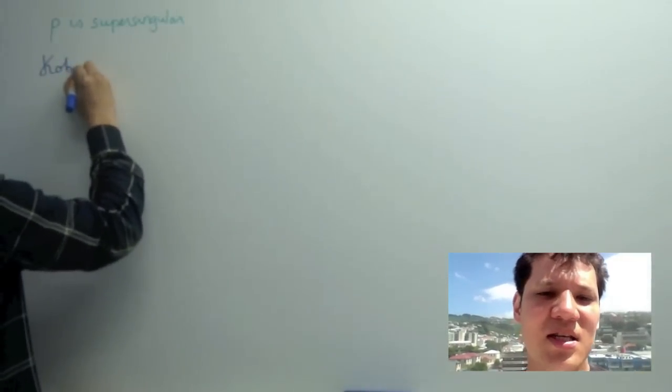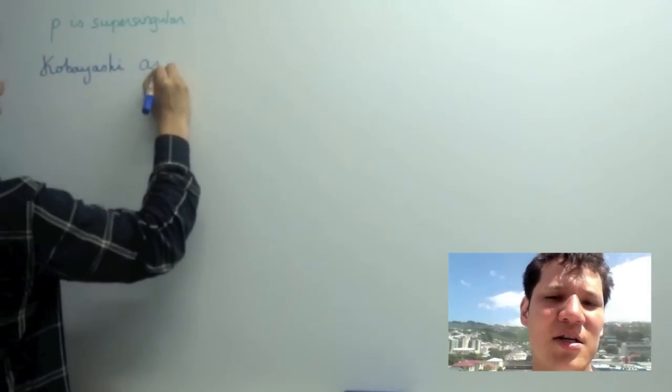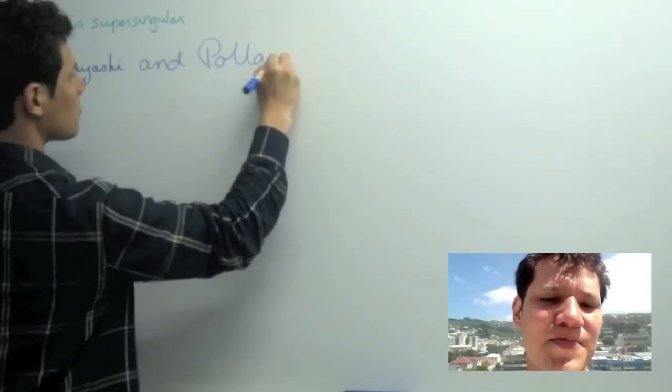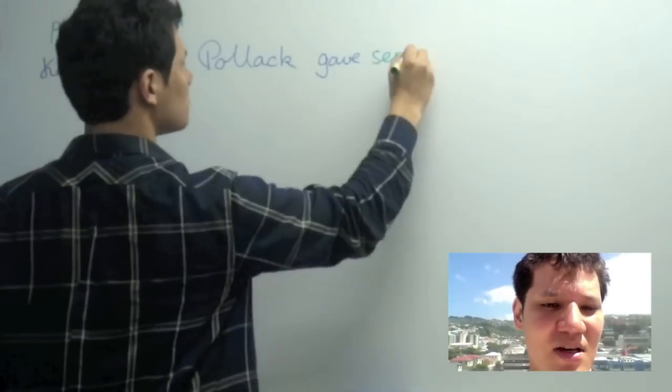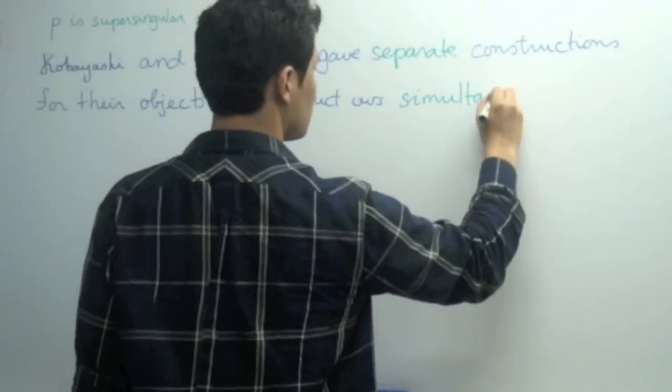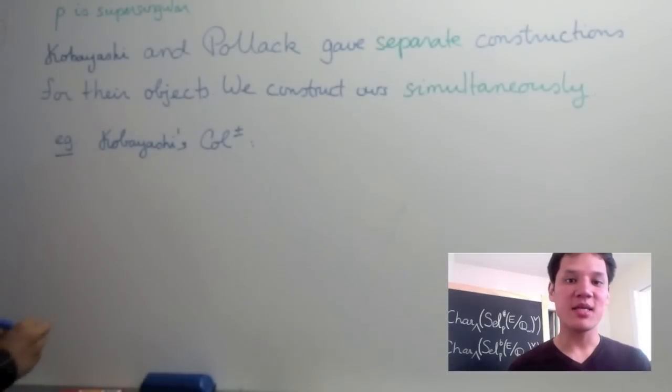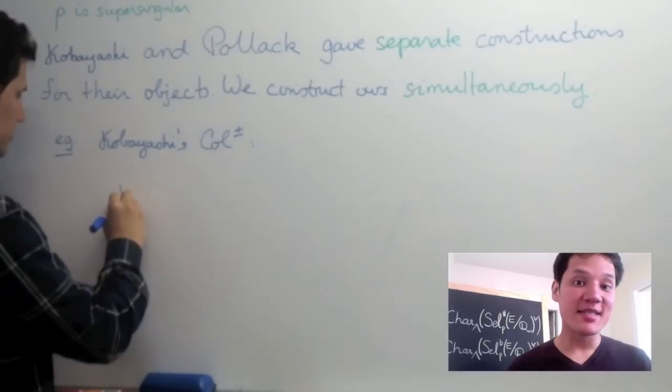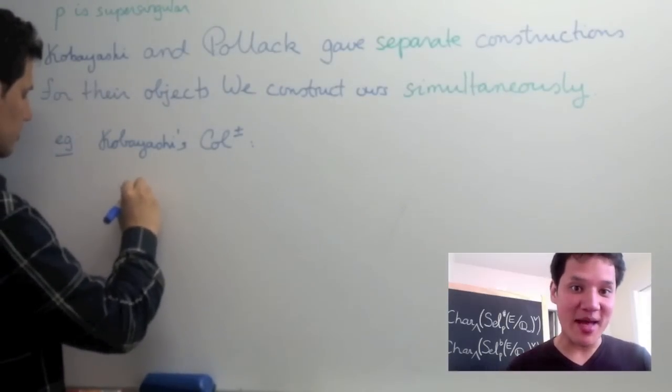The most important new idea in this paper is the following. We recall that Kobayashi and Pollack give separate constructions for the objects. We construct ours simultaneously.